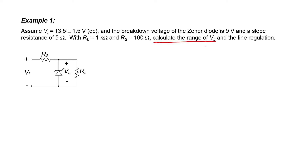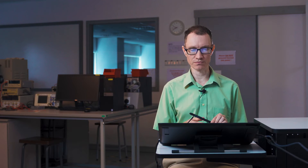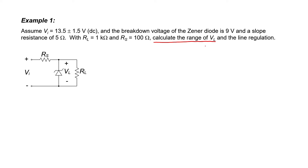Since we know the range of our input voltage, and I'm tasked with finding the corresponding range of our output voltage, what I really need to do here is just find an equation that relates the load voltage to the line voltage. In order to do that, I'm going to redraw the circuit, but I'm going to replace the Zener diode by an equivalent circuit model.